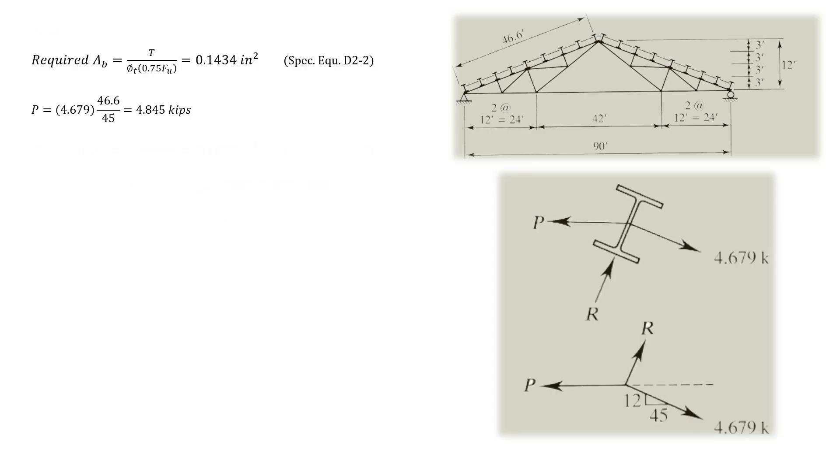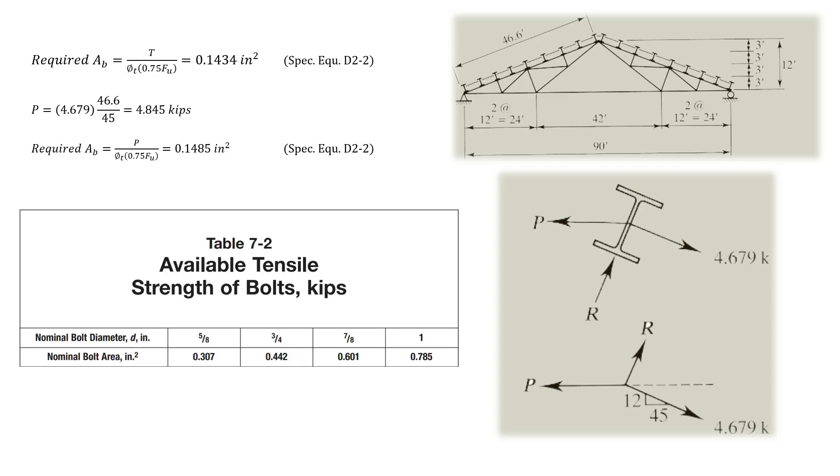Refer to table 7-2 of the AISC specifications to determine the rod diameter required. In this case, the greater area is this and thus, this size is sufficient.